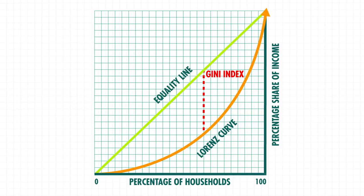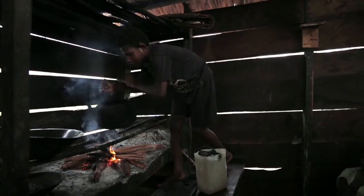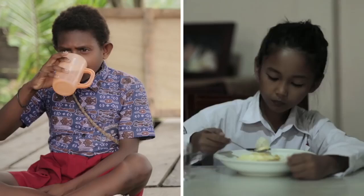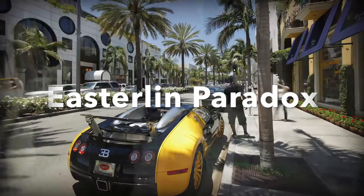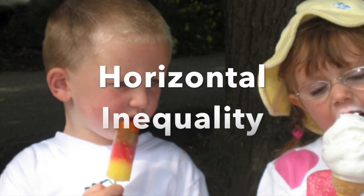But why is inequality such a huge deal? For many reasons. Income inequality means some people have inequitable access to services like health and education. This distinction means that some part of the workforce does not develop to its full potential, making the country's income growth less than what it could potentially be. A second reason why inequality is important is because of the Easterlin paradox, which shows that regardless of absolute increases on income, people's happiness doesn't increase unless inequality decreases. The paradox is explained by horizontal inequality, which refers to the human tendency to measure ourselves in relation to our neighbors and not in absolute terms.